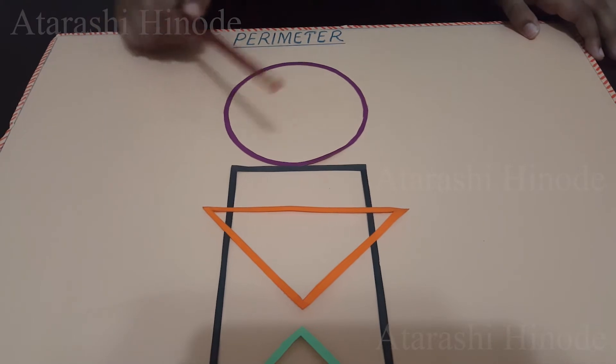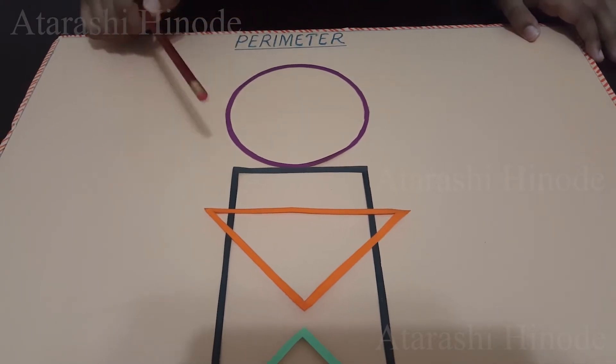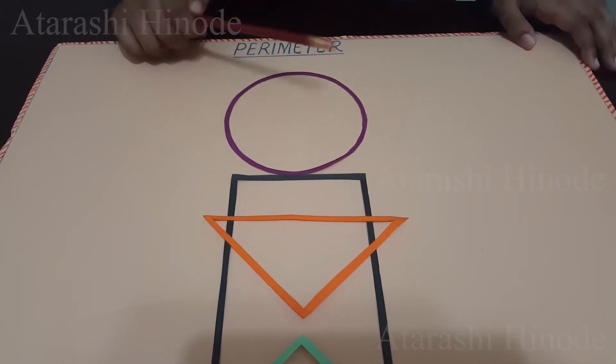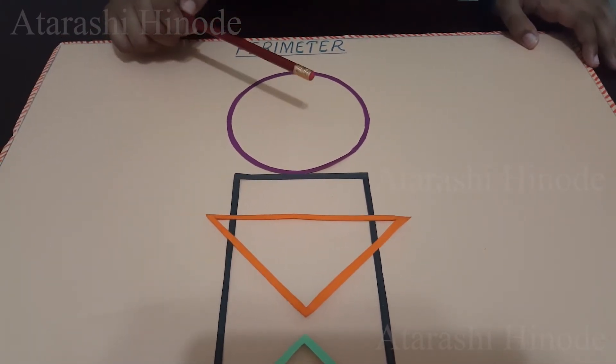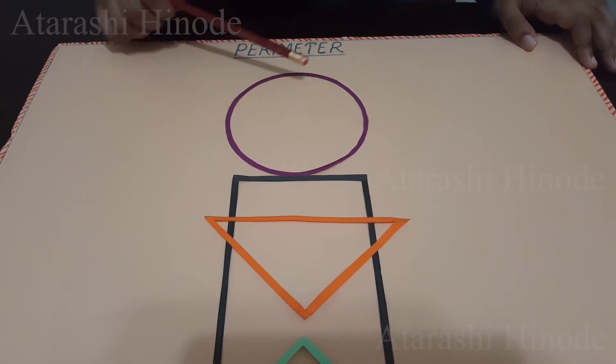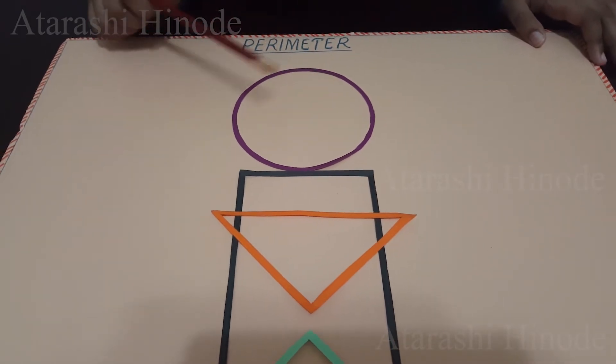Circumference is the term used for the perimeter of a circle — that is, the distance around a circle.